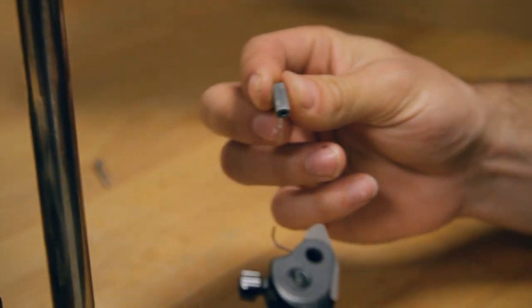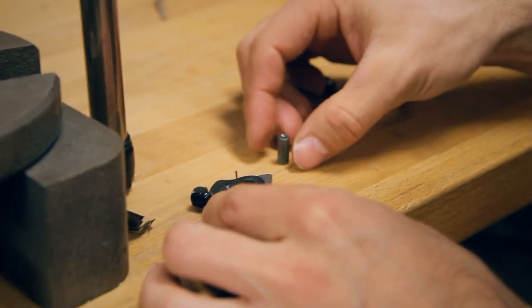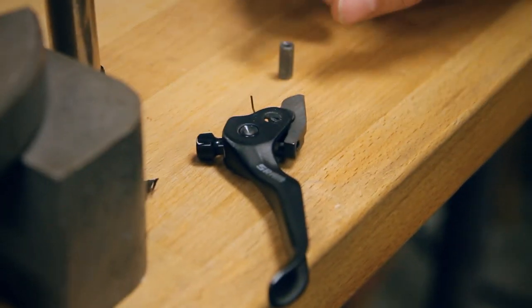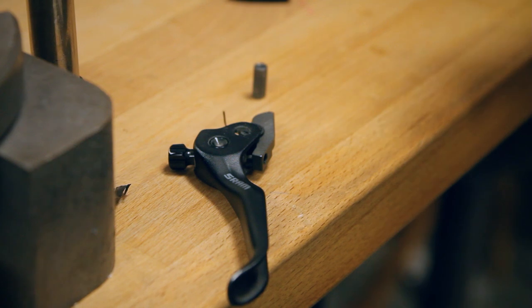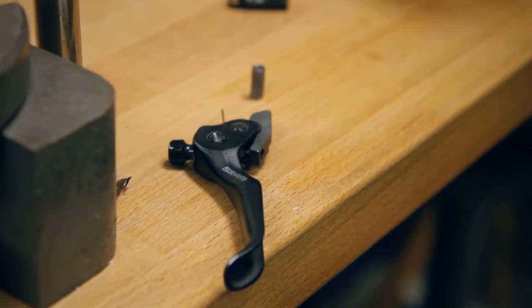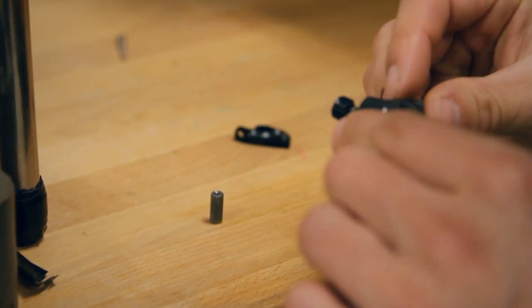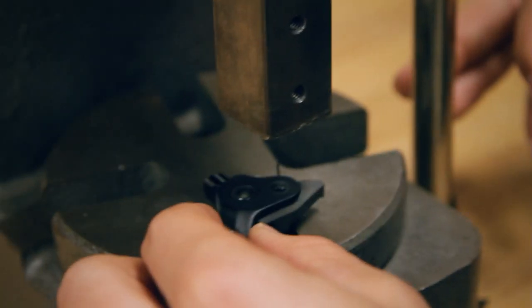So now for pressing this pin back in, one thing you want to make sure you do is press it in from the side where that flat face of the bushing is. If you try and press it in from the other side, it's liable to actually hit the edge of the bushing and then essentially pull the bushing back through and damage it beyond repair. So you want to press that pin in from this side right here.